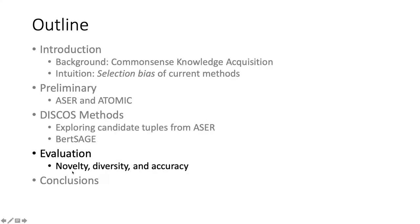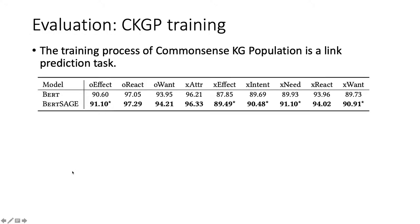Next is the evaluation of our framework. First is the result of the link prediction task. We adopt automatic evaluation to check the accuracy of the common sense knowledge graph population. We compare our proposed BirdSage with the counterpart without GraphSage. We can see that adding a GraphSage layer improves prediction accuracy on all nine relationships.